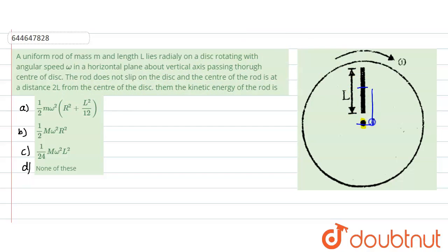Now it is given that its center, from here to here, what is the distance? Distance is given to be 2l. We need to find the kinetic energy of the rod. So kinetic energy of the rod would be what? Because it would be rotating, it would also be rotating about the common center. So the kinetic energy of the rod would be equals to 1 divided by 2, I into omega square.